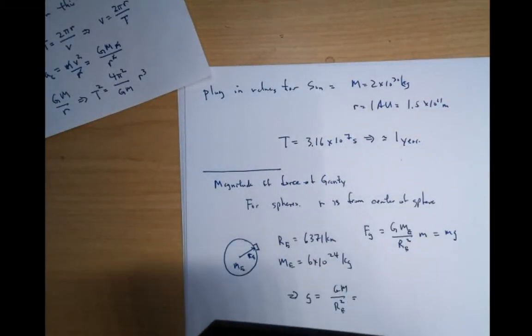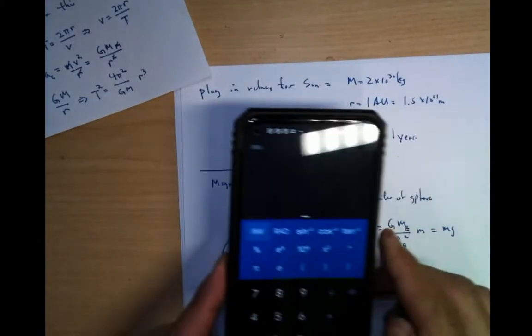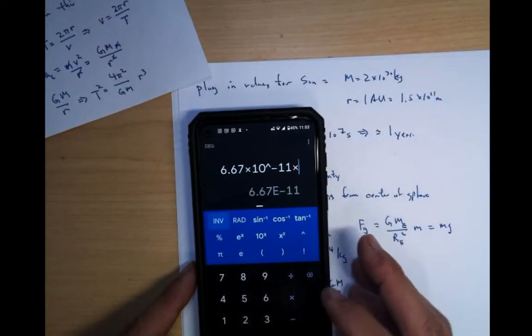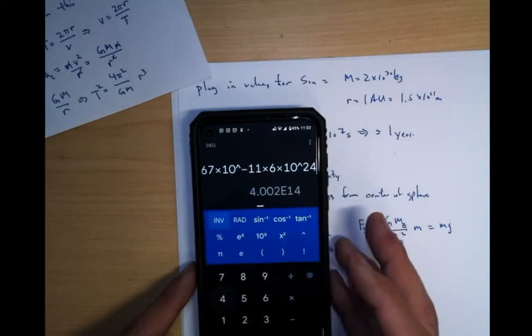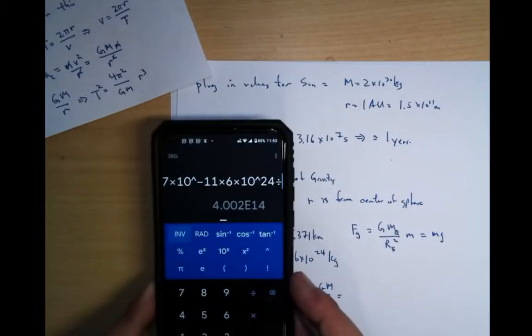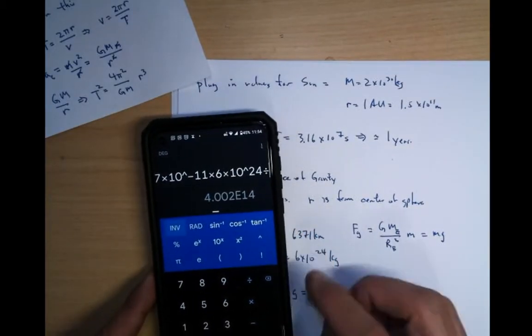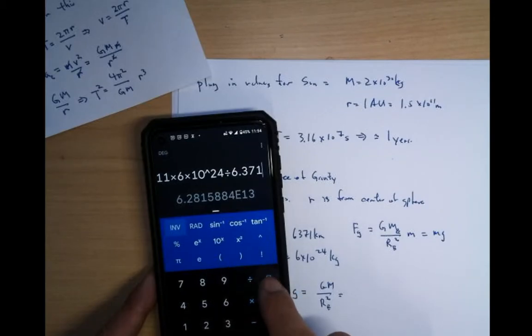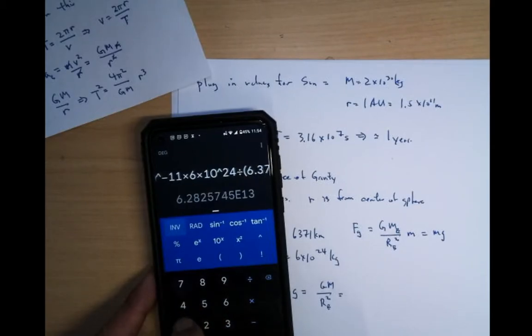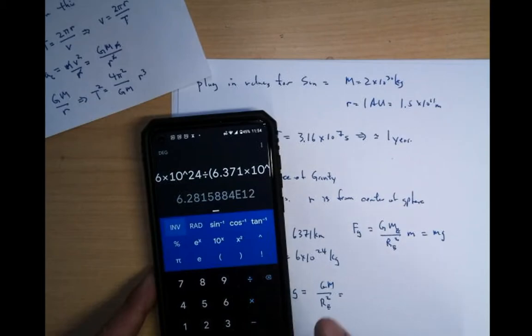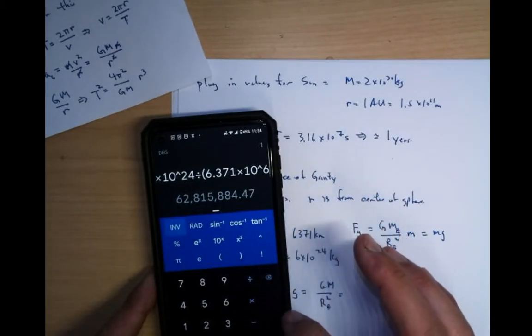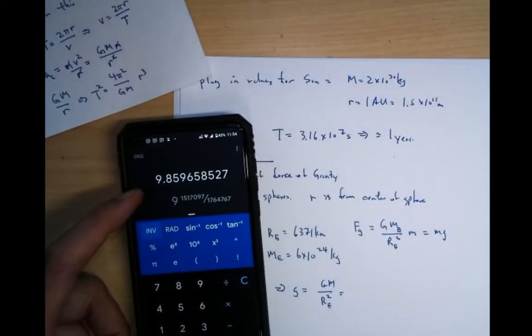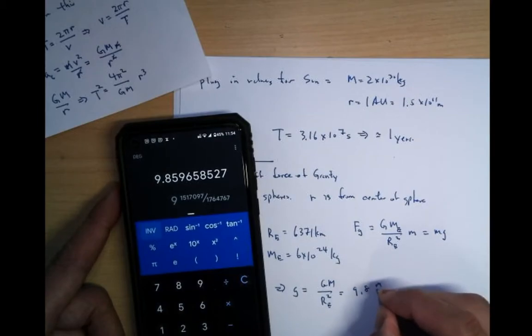Let me check that real quickly. So now it's 6.67 times 10 to the minus 11, times 6 times 10 to 24. And I'll divide this by, this is a kilometer. So 6.371 times 10 to the 6th power, and then I want to square this thing. 9.8. That's exactly what I want to get. 9.8 meters per second squared.